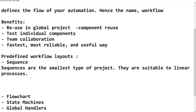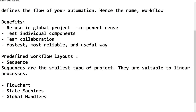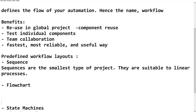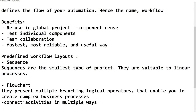Moving on to Flowchart — when we need to handle different decisions during the automation process, we use a flowchart. It has multiple branching logical operators which enable us to create complex business processes. We can connect activities in multiple ways because decision-branching operators are available. This flowchart can also be reused as a smaller project within our global project.